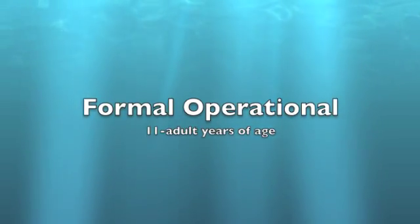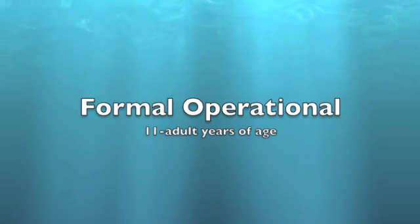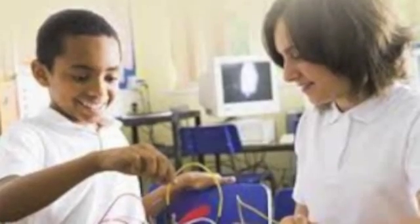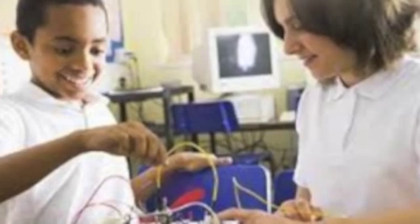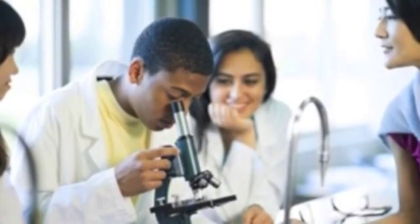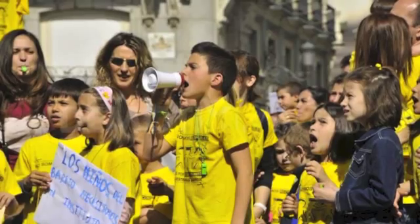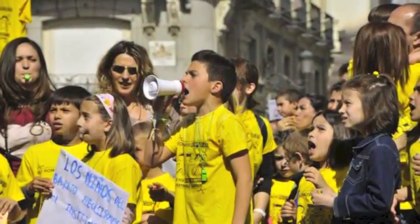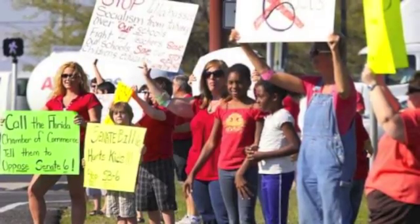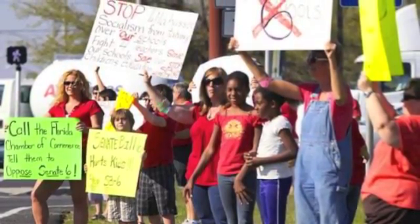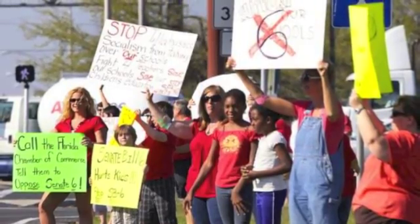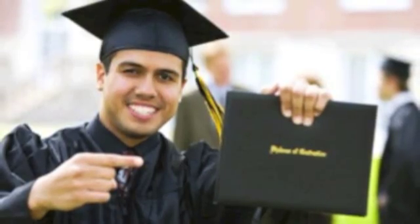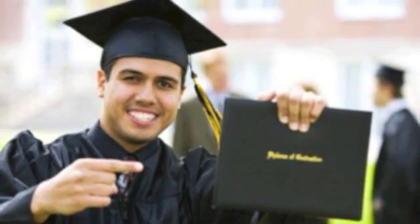The final stage is the formal operational stage, which is ages 11 to adulthood. During this stage, people are able to solve abstract problems in a logical fashion and begin thinking in a more scientific way. They begin to develop concerns about social issues and their identity as a person. Children can perform mental operations on abstract ideas and objects that are only imagined — objects or events they have never encountered personally. In this final stage, they grow into adulthood while also becoming their own person.